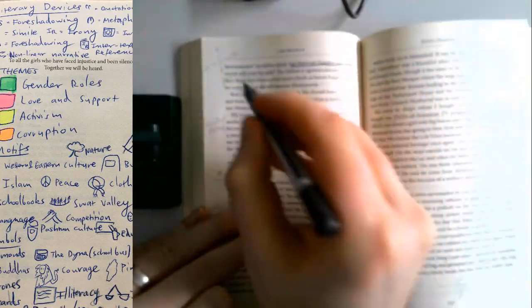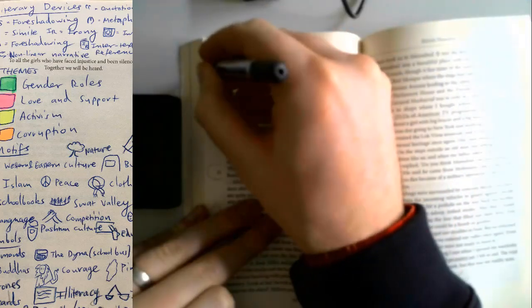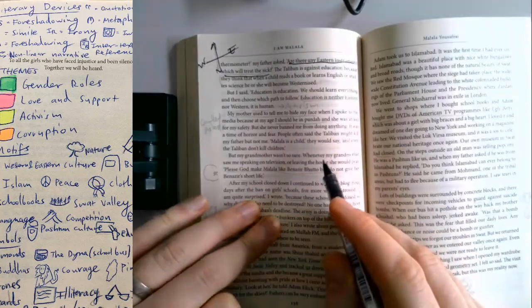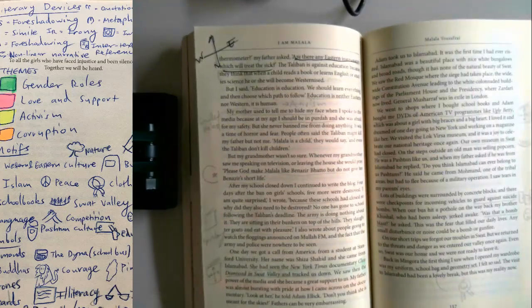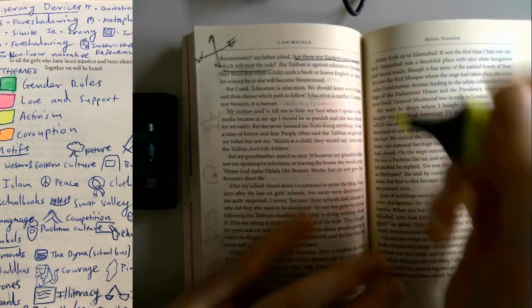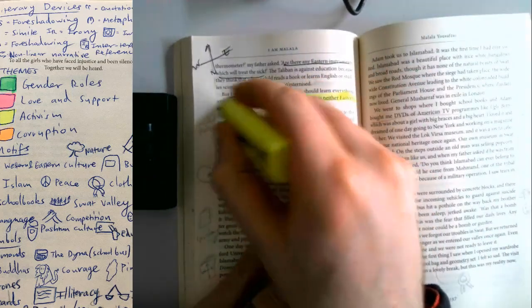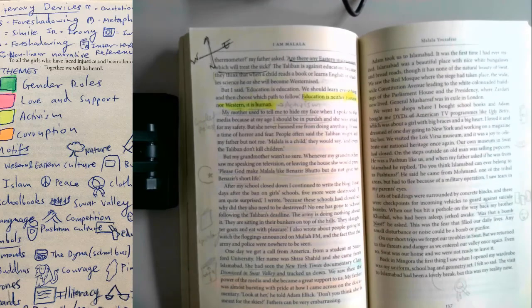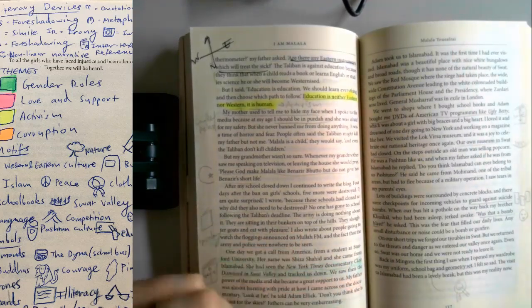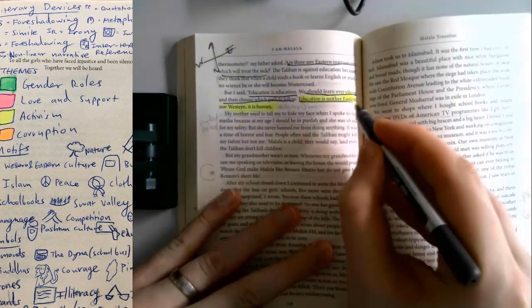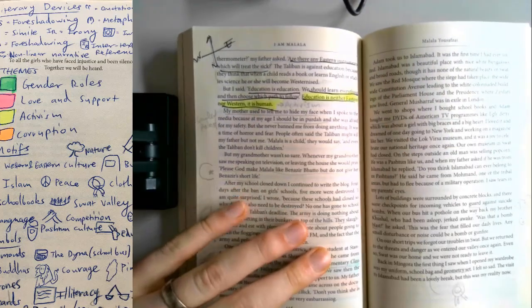Part two, now it's 100% more working pen. They're using Eastern instruments which will treat the sick. So you can see how ideology is starting to become problematic for actual life if it hadn't already. Education is neither Eastern nor Western. It is human. So this is where you can really see she's getting her education is education. We should learn everything and then choose which parts to follow.